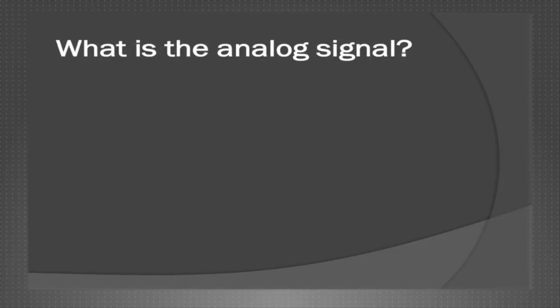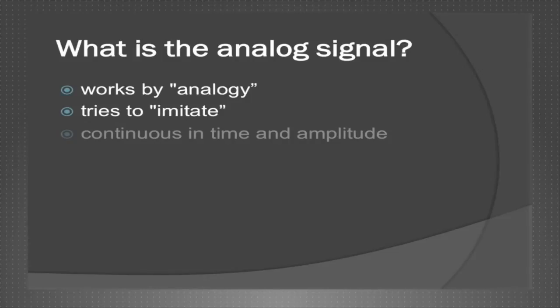So what is the analog signal? An analog representation of a signal is a representation that works by analogy. In other words, it tries to imitate. It is also said that an analog representation is continuous in time and amplitude.